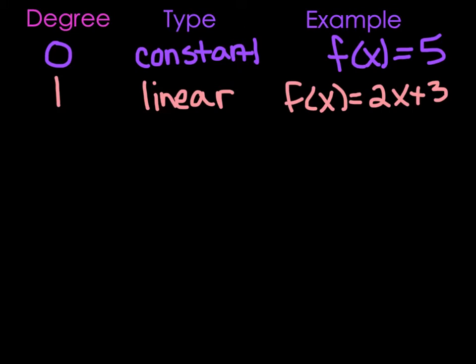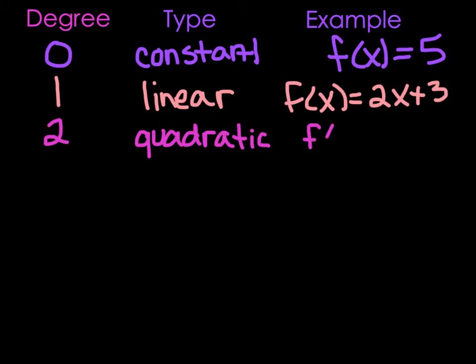If we have a second power — we just did this chapter — these are quadratics. If x is squared, we have a quadratic. An example would be f of x equals 5x squared plus 8.